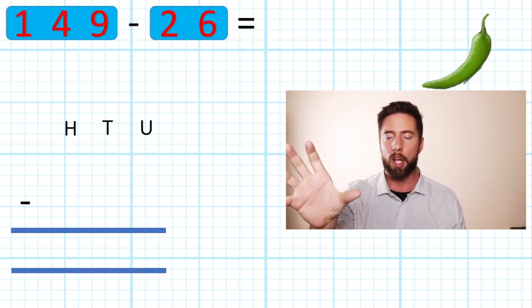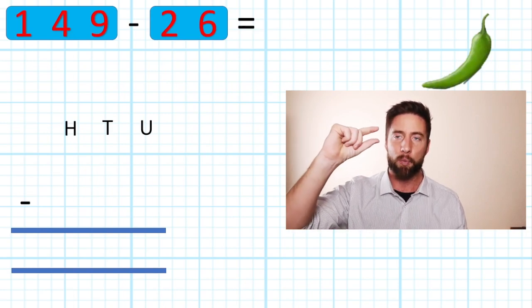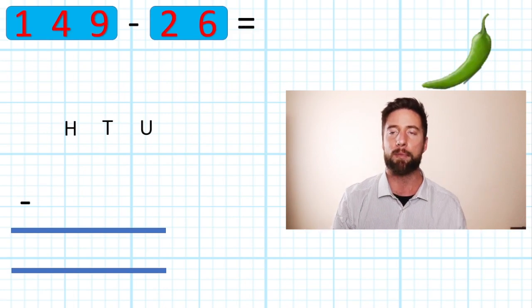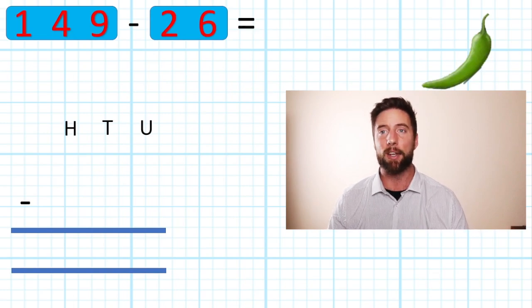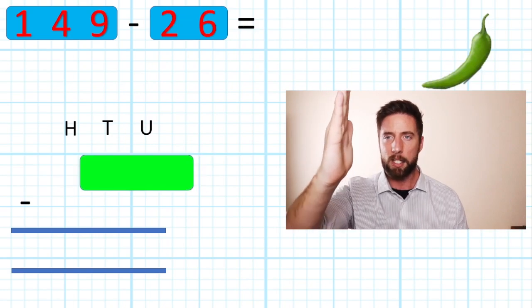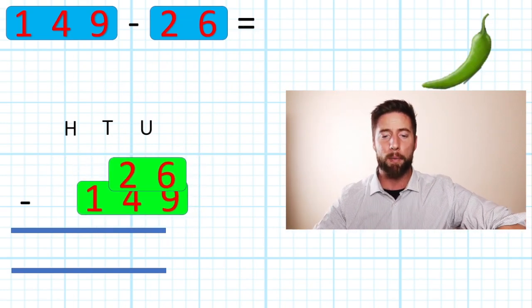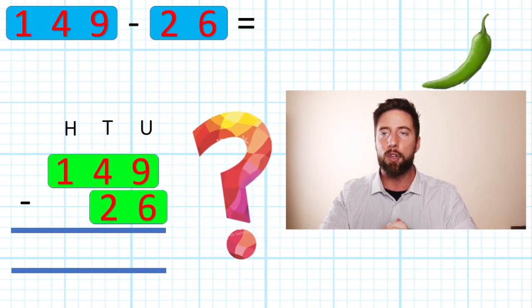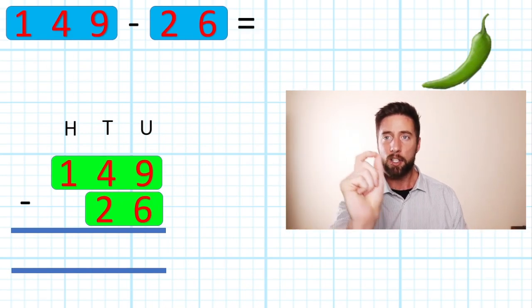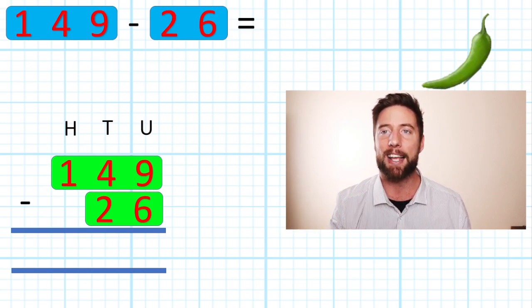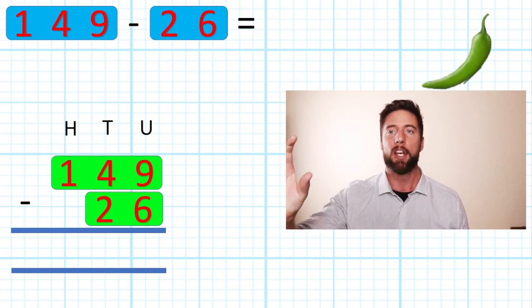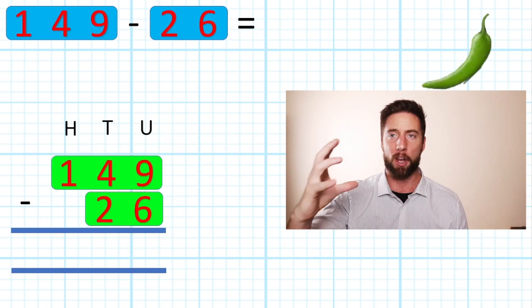First things first, let's arrange our columns. You will know if you've seen any of my other videos, it's very important we put our units, our tens, and our hundreds—our column titles at the top there to remind us to stay in our columns and be neat and organized. So hopefully we're pretty confident with our place value. I'm going to put my units in my units column, my nine and my six in my units. The best tip I can give you: write it as you read it. It says 149 take away 26, so I'm going to write 149 subtract 26.